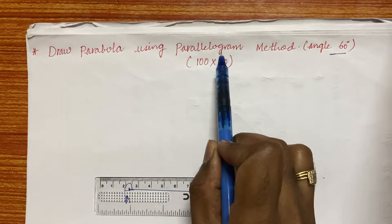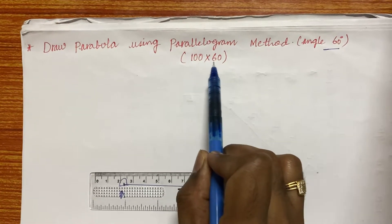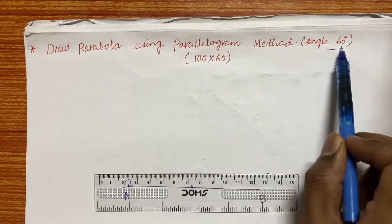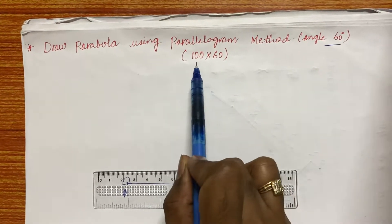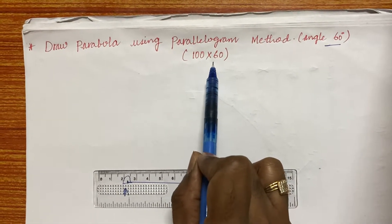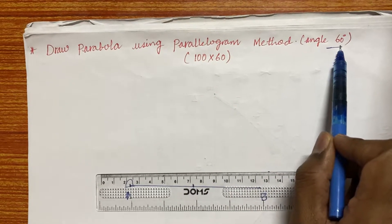I hope you know how to draw parallelogram and sometimes they won't be giving you these specific dimensions as well as the angle. You need to assume those but whereas I am assuming here 100 by 60 and the angle included angle is 60.